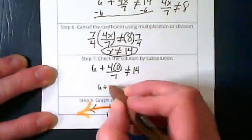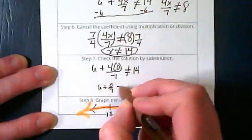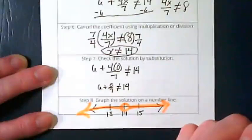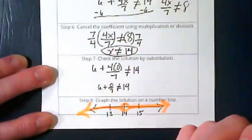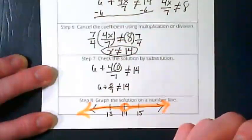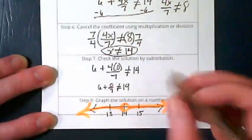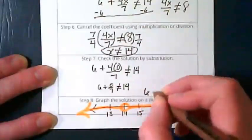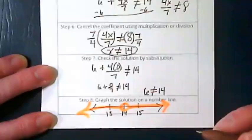So we rewrite this as 6 plus 0 divided by 7 is not equal to 14. What happens when I divide 0 by 7? I get a 0. So I've got 6 is not equal to 14. Is that true?